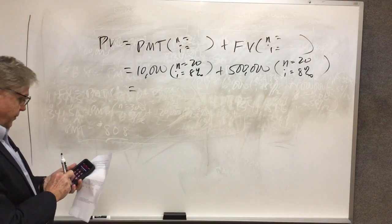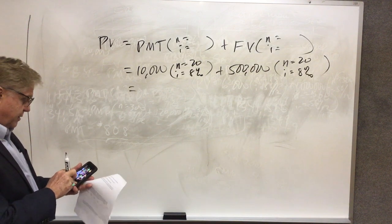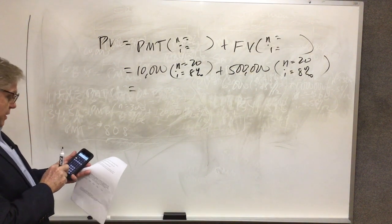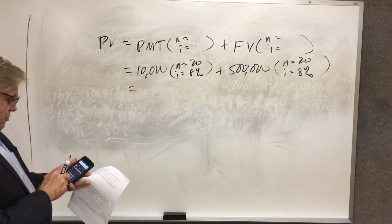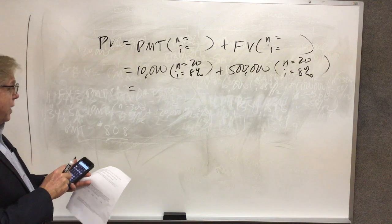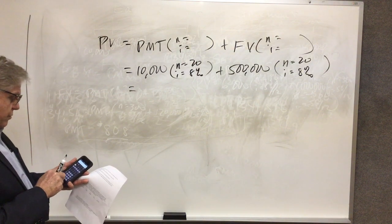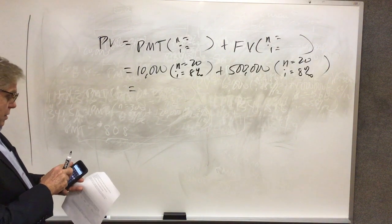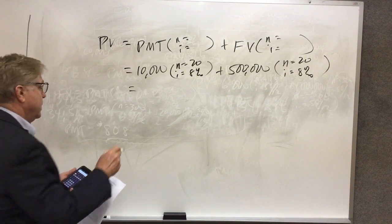Let's solve for the present value of this stream of payments. Let me clear out my calculator first. $10,000 is the payment, 20 is n, 8 is the i, $500,000 is the future value, and when I compute present value it tells me